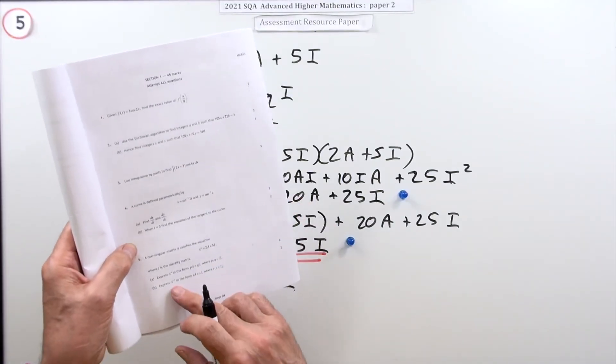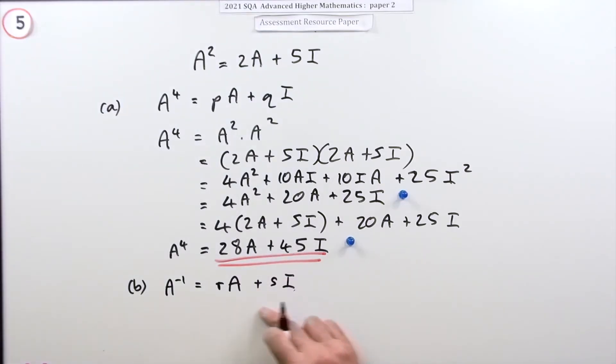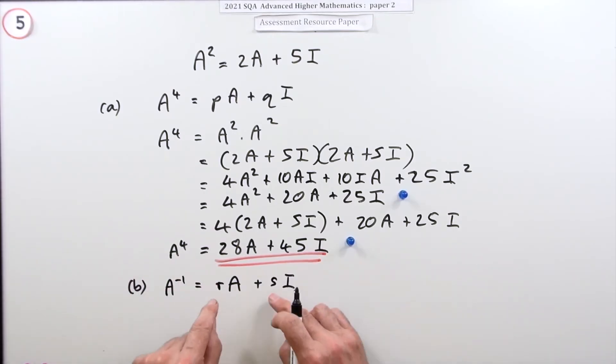Then in part B, it says express A to the negative one, the inverse of A, in that same form of something times A and something times I. It doesn't say explicitly stating the values of r and s—it's just using r and s to distinguish it from them.